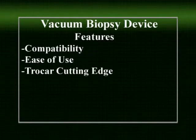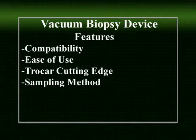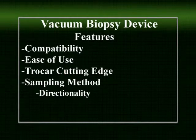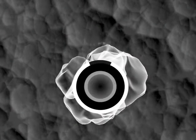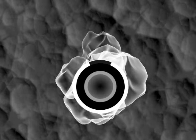Be sure to evaluate the cutting edge of the trocar. This can be very important as you are often trying to pass the trocar into dense breast tissue, which will be only moderately compressed in order not to eliminate regions of subtle, suspicious enhancement. Evaluate the methods used for tissue sampling and how easy it is to determine the direction of the biopsy sampling. As illustrated in this animation, you want to be accurate as you direct the biopsy aperture towards a small lesion.